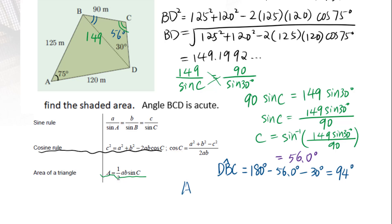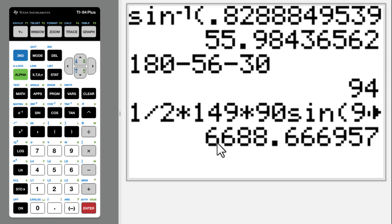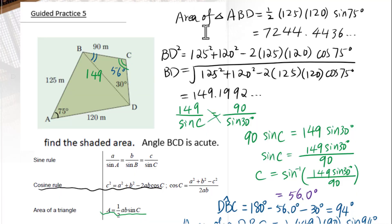Then the area of triangle DBC equals one-half times 149 times 90 sine 94 degree equals 6688.669. We already figured out the area for triangle ABD which is 7244.4436.